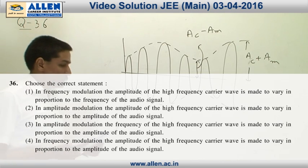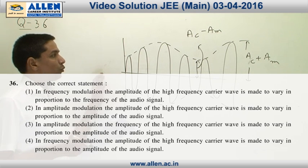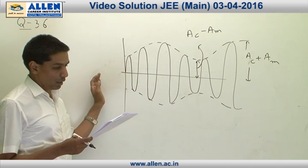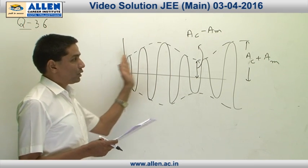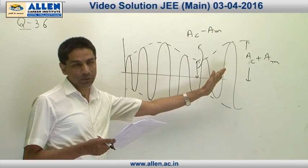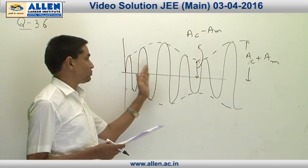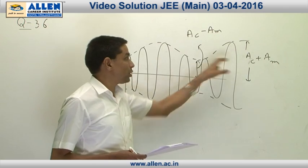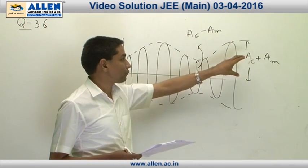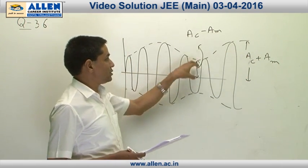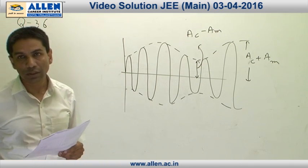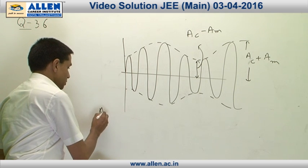In question number 36, it is asked how the amplitude is modulated in an amplitude modulated wave. The figure of the amplitude modulated wave comes out to be like this. Here, the amplitude of the carrier wave gets modified by the amplitude of the modulating wave. This becomes AC plus AM and this becomes AC minus AM. Of the 4 options, the correct option is number 2. Answer is number 2.